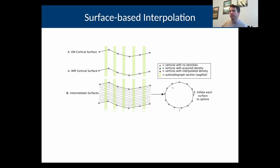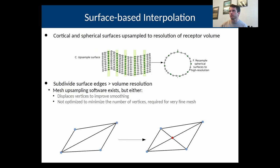We can then inflate all of these surfaces to a sphere, which will become important later on. The next thing to do is to upsample the meshes so that they match the resolution of the autoradiographs or of the reconstructed volumes that you're trying to fill.